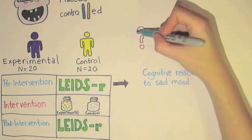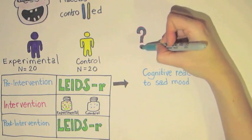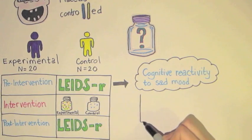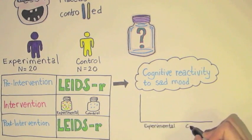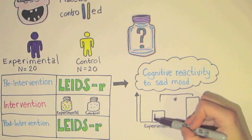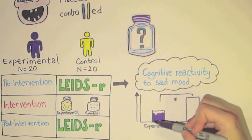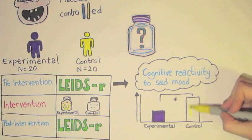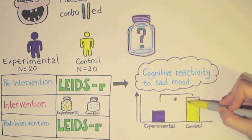So what happened with those who took the probiotic mixture? The results are fairly promising. In the pre-intervention phase, there was no difference in cognitive reactivity to sad mood between the two groups. However, after four weeks of supplementation, the experimental group scored significantly lower on cognitive reactivity to sad mood compared to the control group.